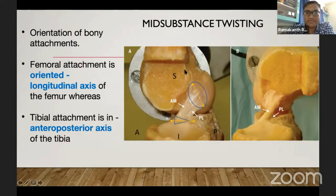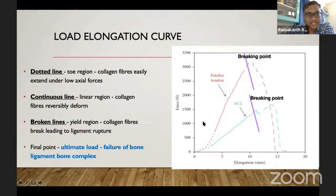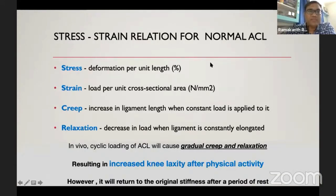These attachments cause the bundles to twist around each other during knee flexion. A load-to-elongation graph shows the amount of force and elongation of the ligament up to its breaking point, compared with the patellar tendon. The stress-strain relationship of the normal ACL shows that cyclic loading causes gradual creep and relaxation — an increase in the length of the tendon during normal physical activity — but it returns to original stiffness after a period of rest.